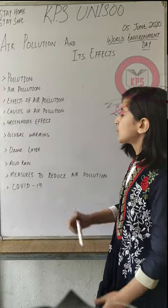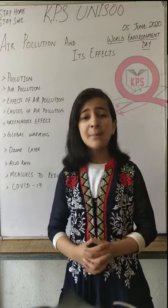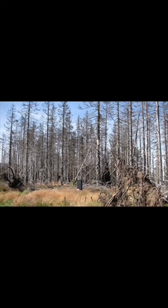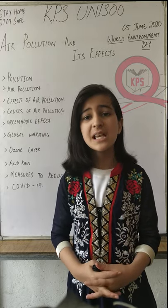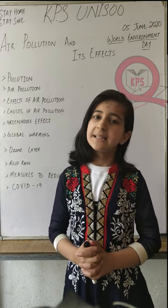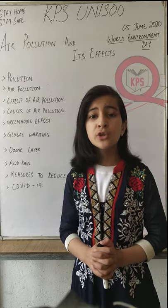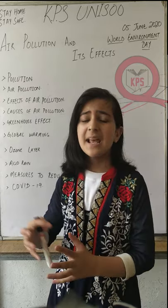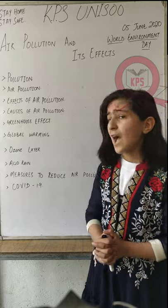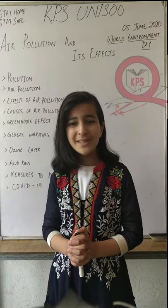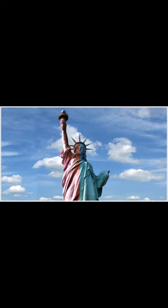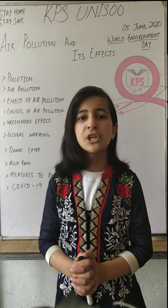Now let's talk about acid rain. Another effect of air pollution is acid rain. It occurs when certain gases created by burning fossil fuels mix with particles of water in the air. When these particles fall to the ground as rain or snow, they damage buildings and forests. Historic monuments like the Statue of Liberty, the Taj Mahal in India, and St. Paul's Cathedral in London have been damaged by acid rain.